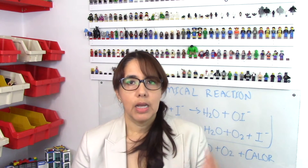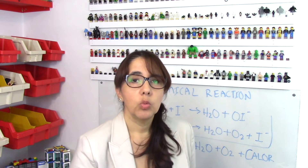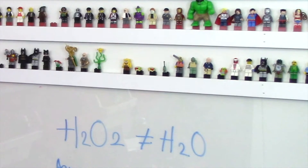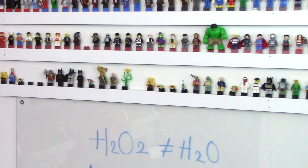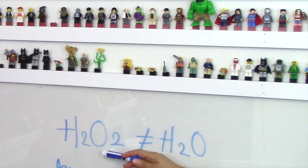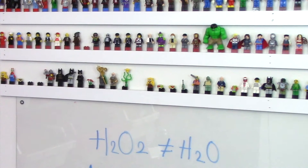We're going to combine hydrogen peroxide — this is a concentrated hydrogen peroxide — and we're going to combine it with potassium iodide. Water is H2O: two atoms of hydrogen, one atom of oxygen. If we add another atom of oxygen, that will become hydrogen peroxide. It's a totally different substance.